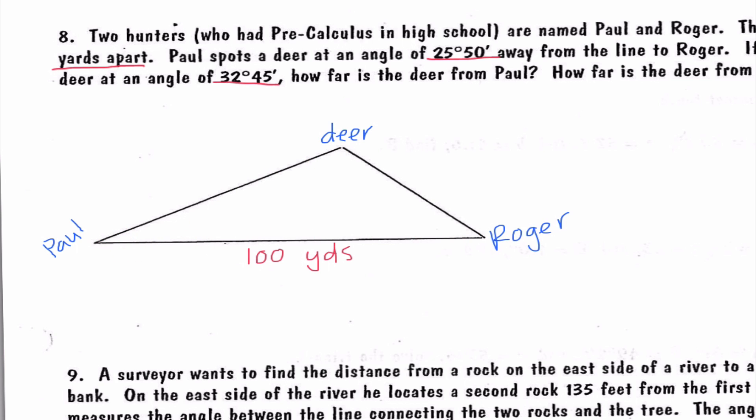It tells me that Paul spots a deer 25 degrees and 50 minutes away from the line to Roger. We've learned previously that with 25 degrees and 50 minutes, with those minutes, we need to take those and divide by 60 because there's 60 minutes in one degree, and I end up getting 25.8 degrees. The last piece of information we said was the angle from Roger to the deer is 32 degrees and 45 minutes. When I convert that, I end up getting 32.8 degrees.